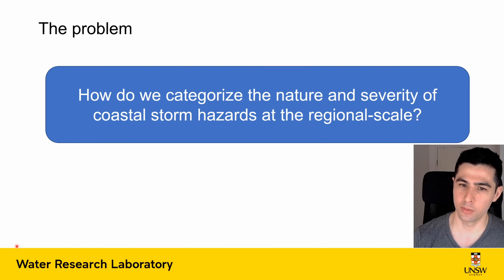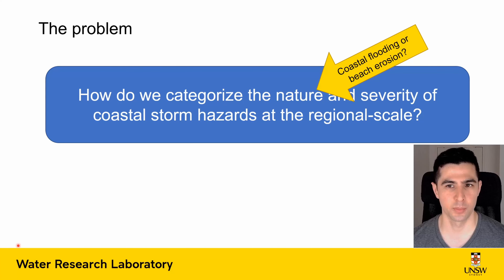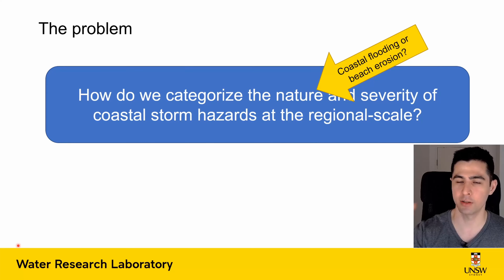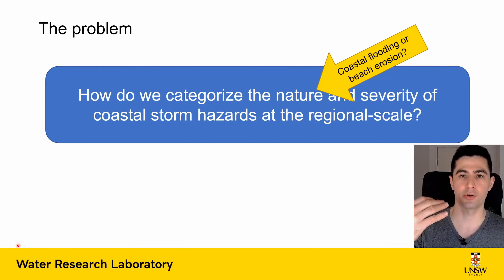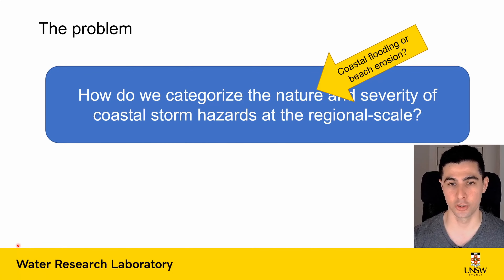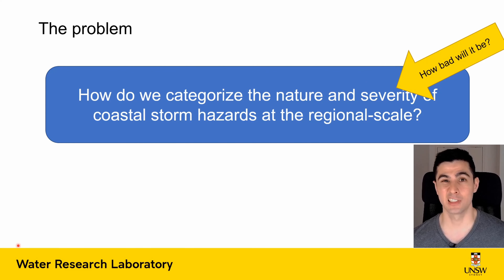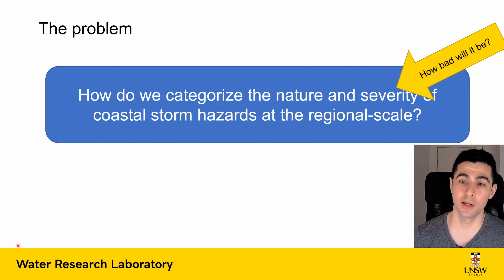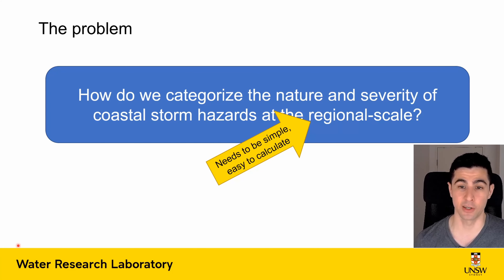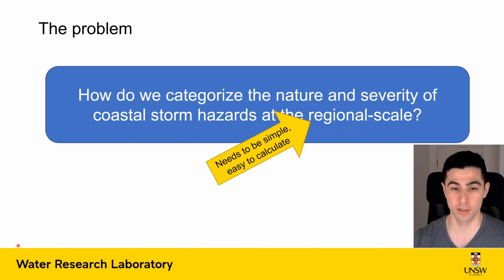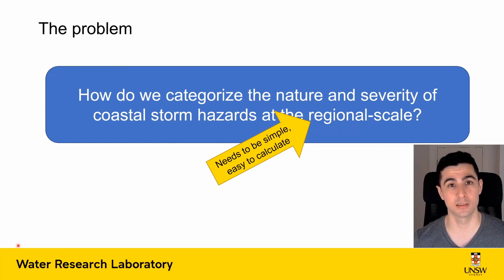When we talk about the nature of hazards, it's understanding what type of hazard it's going to be — is it going to be coastal flooding, where we have really high elevated total water levels, or is it going to be beach erosion, where the total water level doesn't get too high but the long duration of storm combined with high wave energy is going to produce a lot of erosion, which can affect houses, property, and infrastructure located close by. For severity, we need to understand how bad it's going to be, how much preparation we need to do, and what the recovery is going to be like. The other important term in this problem is regional scale.